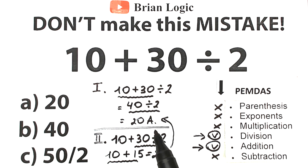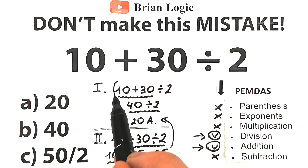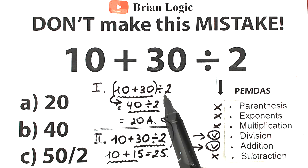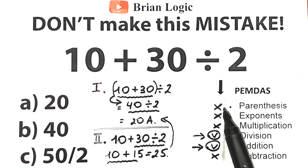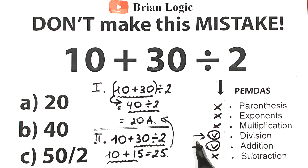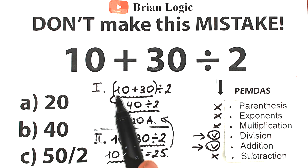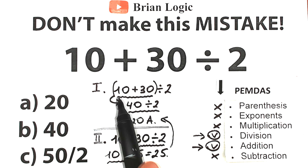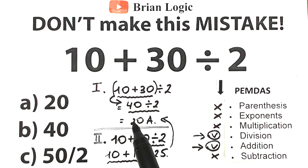But take a look closely — with parentheses, this question would give a different result. Because parentheses have the highest priority, it doesn't matter what operations are inside parentheses — you always start from there. Maybe addition, division, multiplication, or exponents — every time you start from the parentheses. So with parentheses around 10 plus 30, we do that first: 10 plus 30 equals 40, then 40 divided by 2 equals 20. That's a valid solution when we have parentheses.